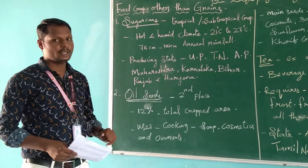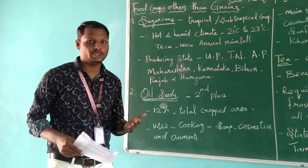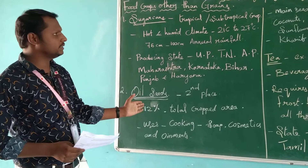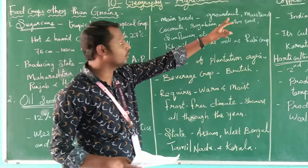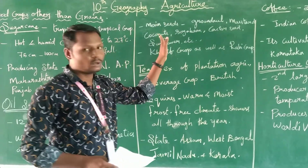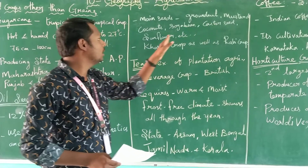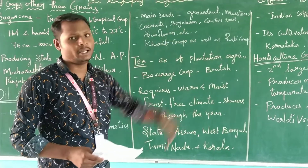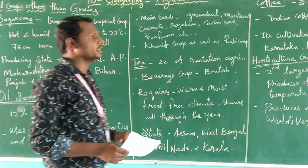The main oilseeds produced in our country are groundnut, mustard, coconut, soybean, castor seed, and sunflower, among many others. These are the main seeds from which oil is produced.